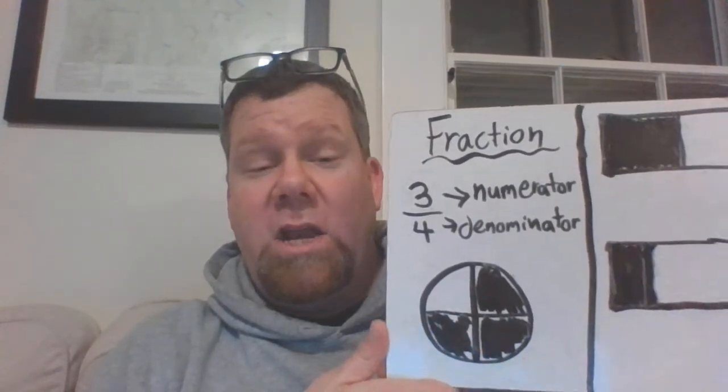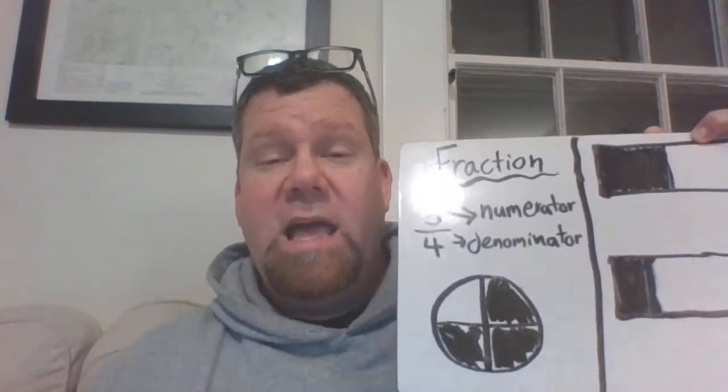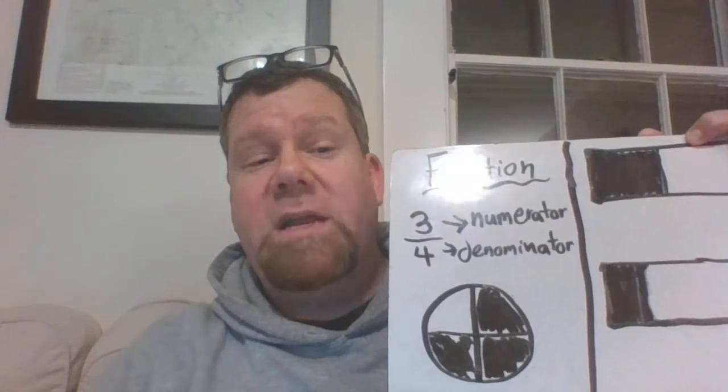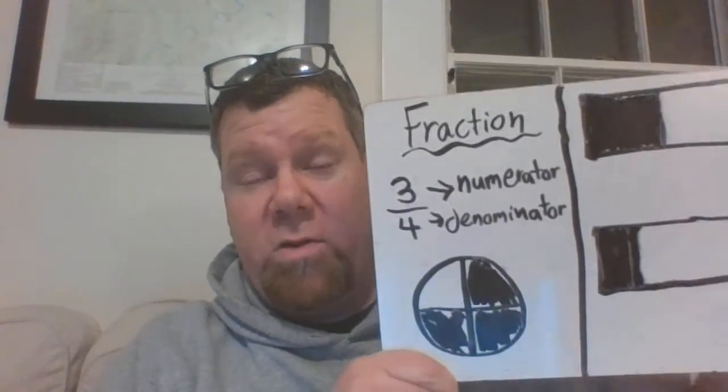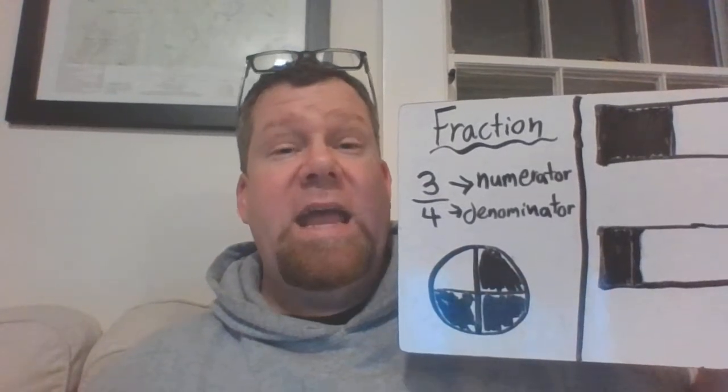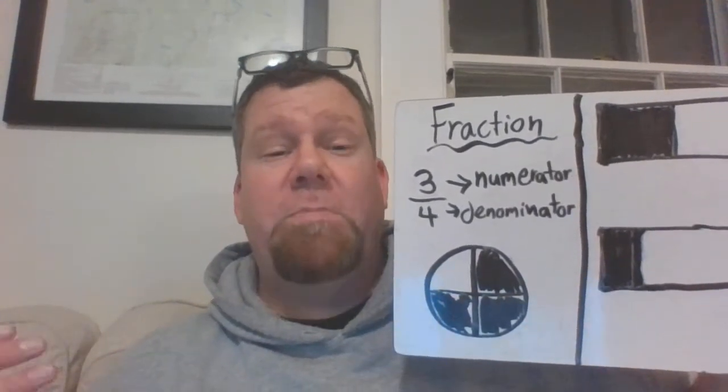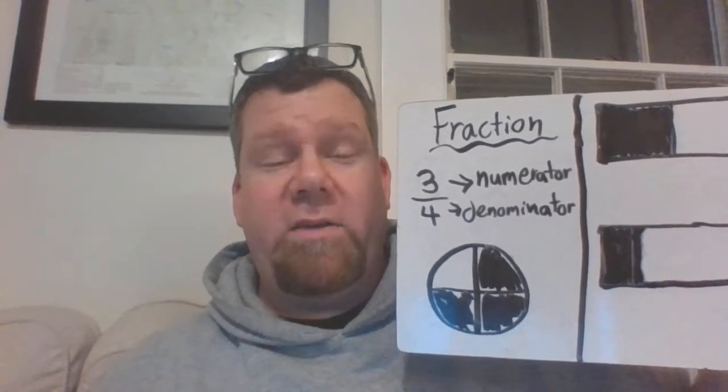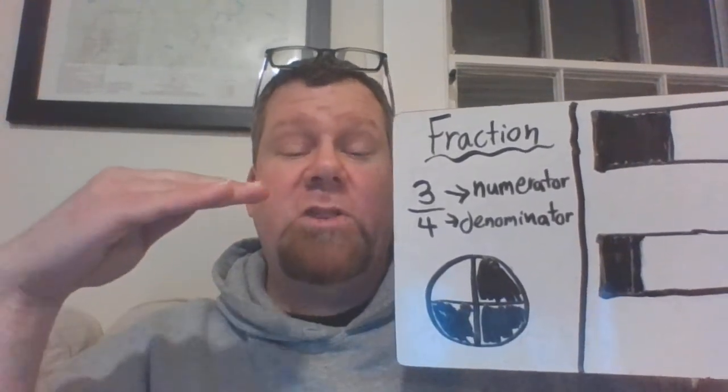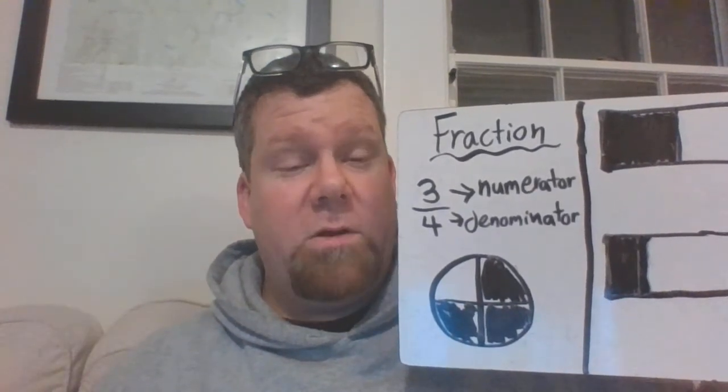The number above the line, the 3 there, is called a numerator. That usually stands for how many parts we have. Now sometimes when you're talking about a fraction, it might say he ate this many amount of pieces of pie and that might be the numerator, what you're looking for. But in this case we'll just keep it simple and say the numerator is the amount of parts that you have.